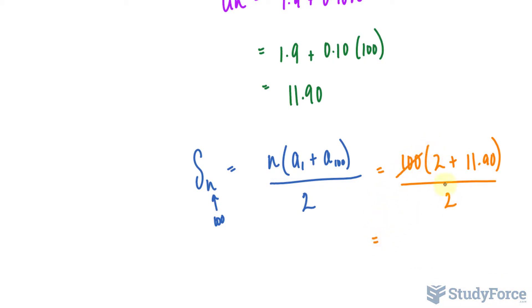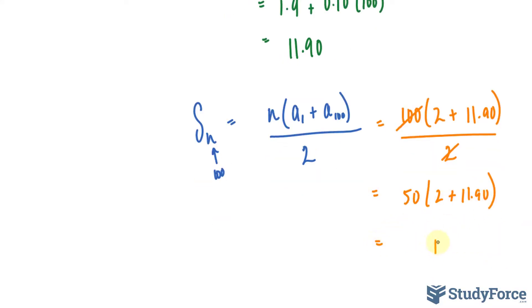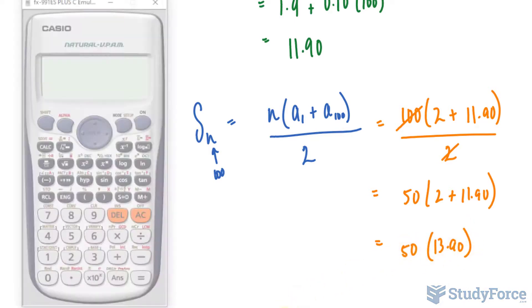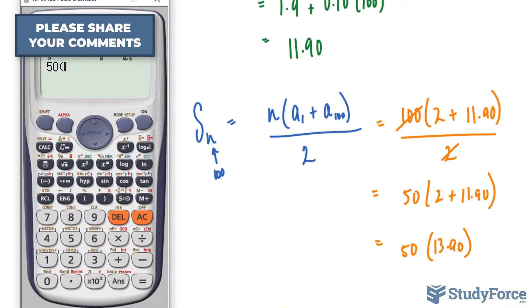That cancels out. We get 50 times 2 plus 11.90. Adding these two up, that's 13.90 times 50. And this is how much will be made in total, having sold 100 subscriptions: $695.